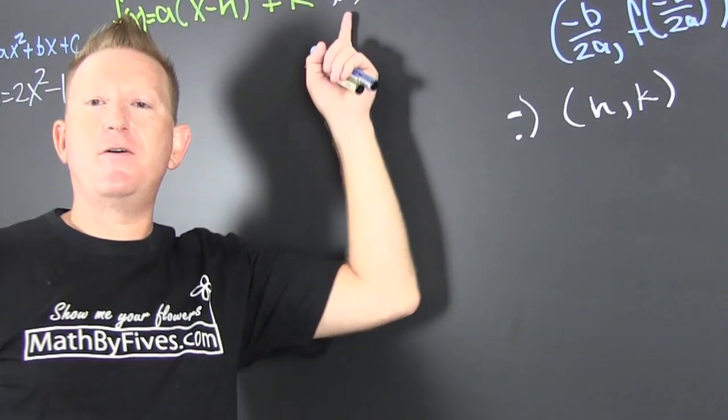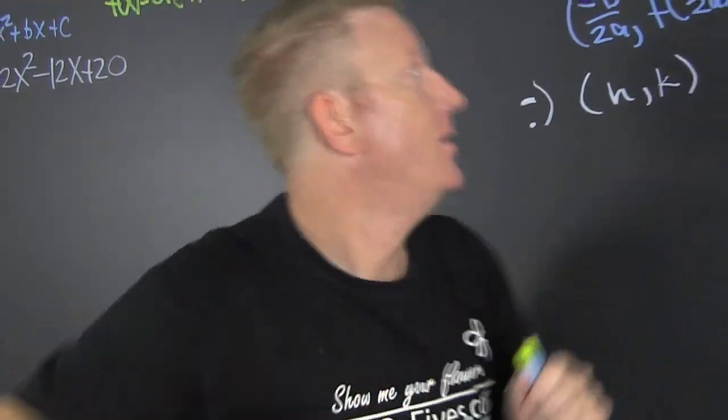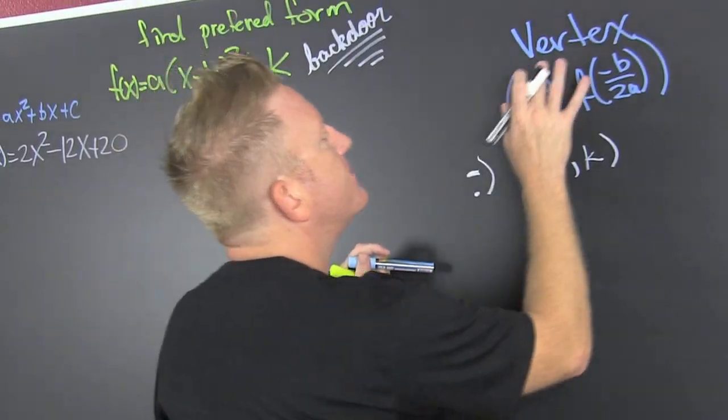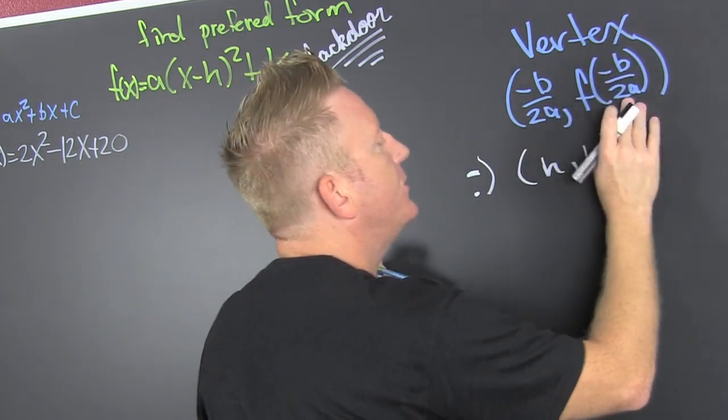And we're trying to use our back door. What is the back door? That's using the vertex formula. What's the vertex formula? That's minus b over 2a and f of minus b over 2a.